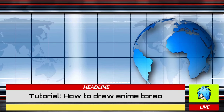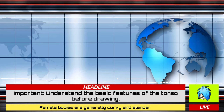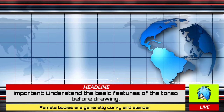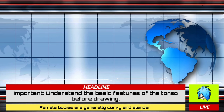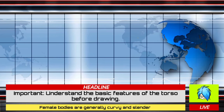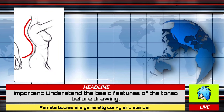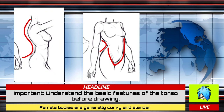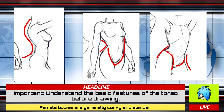Before we draw the female torso, it is important to note significant features. Female bodies tend to emphasize curves mostly around the spine, the abdomen, and the hips.